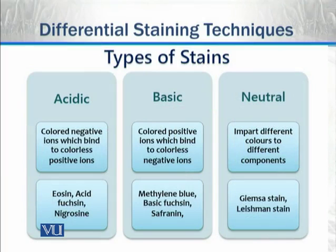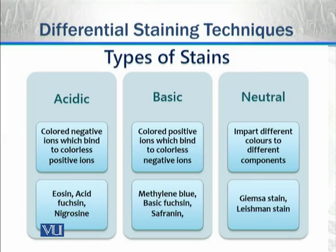Different types of stains used in common form are three types: Acidic stains, Basic stains, and Neutral stains. Acidic stains bind to positively charged ions. Examples include Acid Fuchsin and Nigrosin. Basic stains bind to negatively charged ions. Examples include Methylene Blue, Basic Fuchsin, and Safranin. Neutral stains impart different colors to different components of the cell.